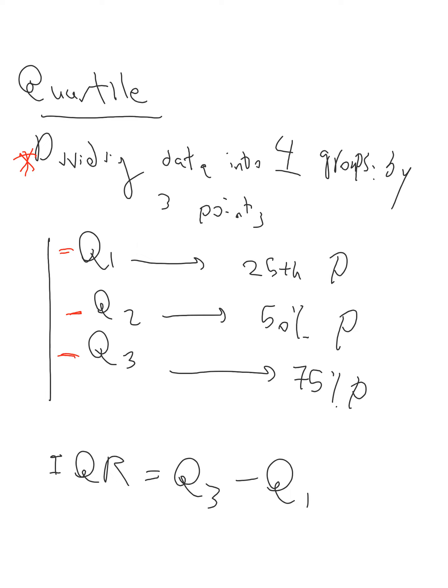Basically, first quartile is the 25th percentile. This P means percentile. The first 25th percentile of our data set. The second quartile is the 50th percentile. And the third quartile is the 75th percentile of the data set.